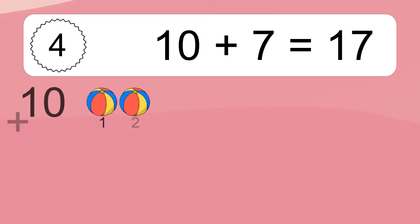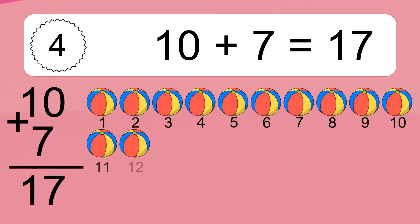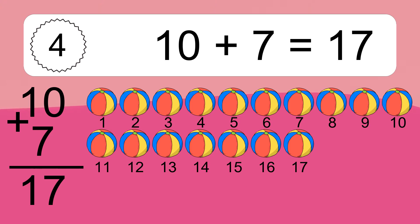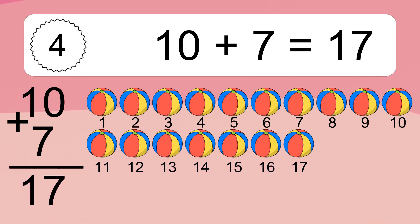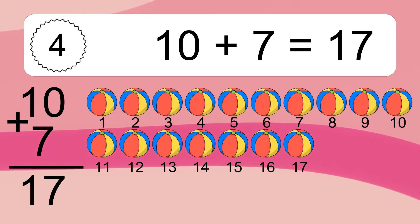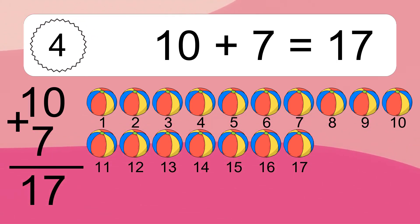10 plus 7 equals what? 10 plus 7 equals 17. Let's count it: 1, 2, 3, 4, 5, 6, 7, 8, 9, 10, 11, 12, 13, 14, 15, 16, 17.